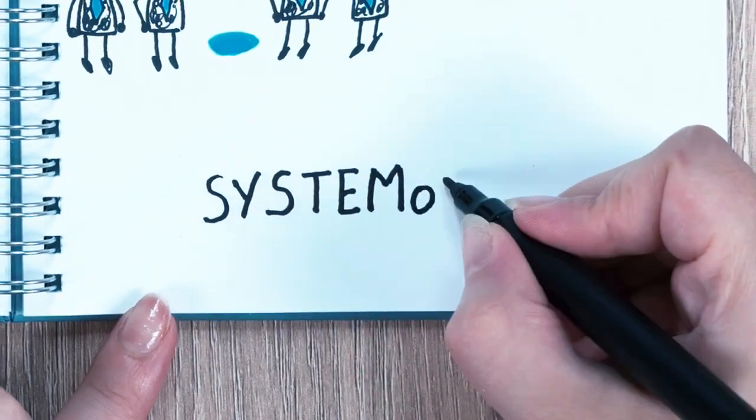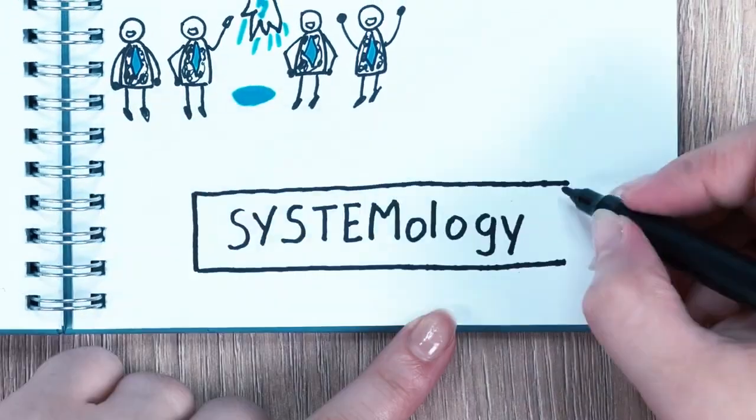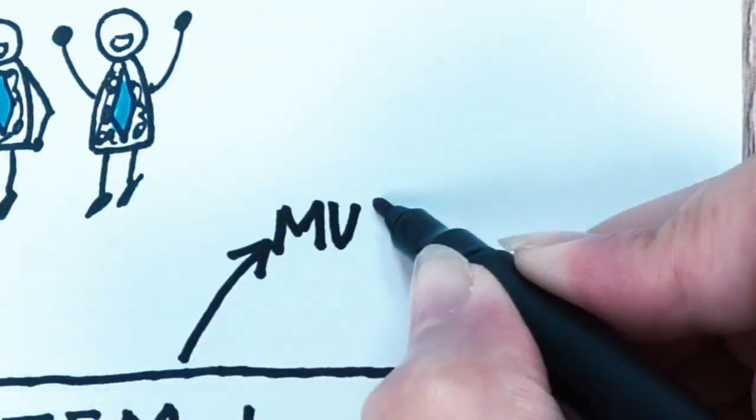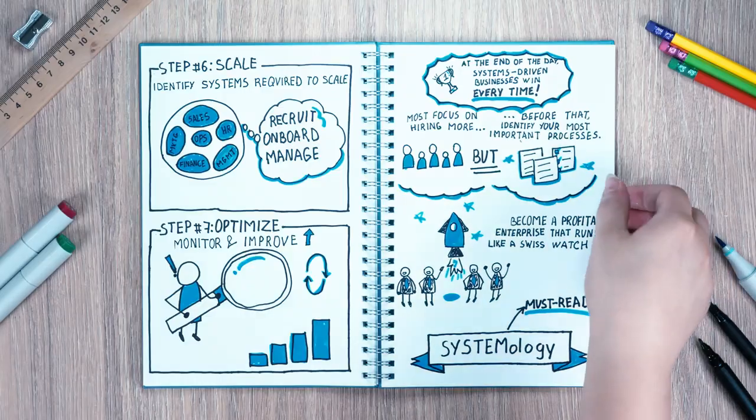Systemology: create time, reduce errors, and scale your profits with proven business systems is a classic business book that every aspiring entrepreneur should read.